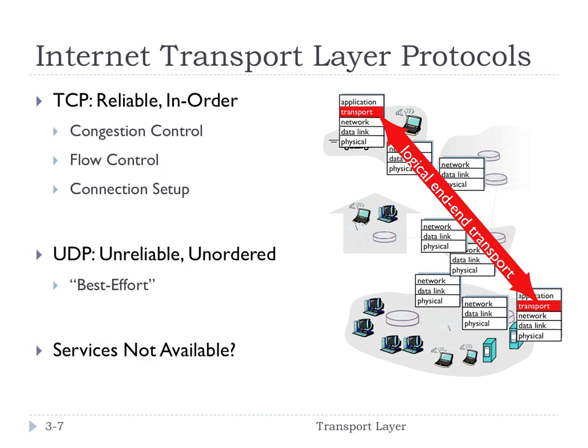UDP is unreliable and has no order guarantees — it's best effort. It's very much a no-frills extension of the Internet protocol IP that it sits on top of, adding very little overhead and providing very little service. Notice that neither TCP nor UDP provides delay guarantees, bandwidth guarantees, or security.